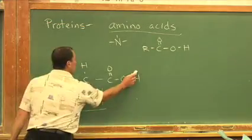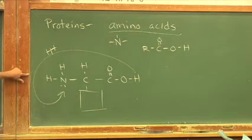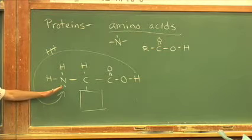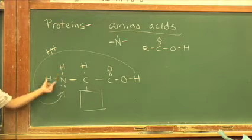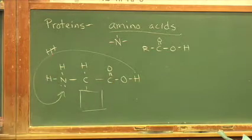The H plus could leave the carboxylic acid group on the right, come over here onto the left, giving us NH3 plus and COO minus on the right side. Either form is acceptable. We're all looking at the same thing.